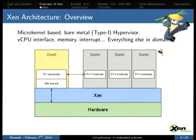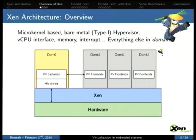Xen is what we call a microkernel-based type-1, bare metal hypervisor. It's a very thin layer of software sitting exactly on top of hardware, with nothing underneath it, and in charge of just the CPUs, the memory, and the interrupts. There is nothing in there which deals with device drivers or any such things. That's why we call it a microkernel.